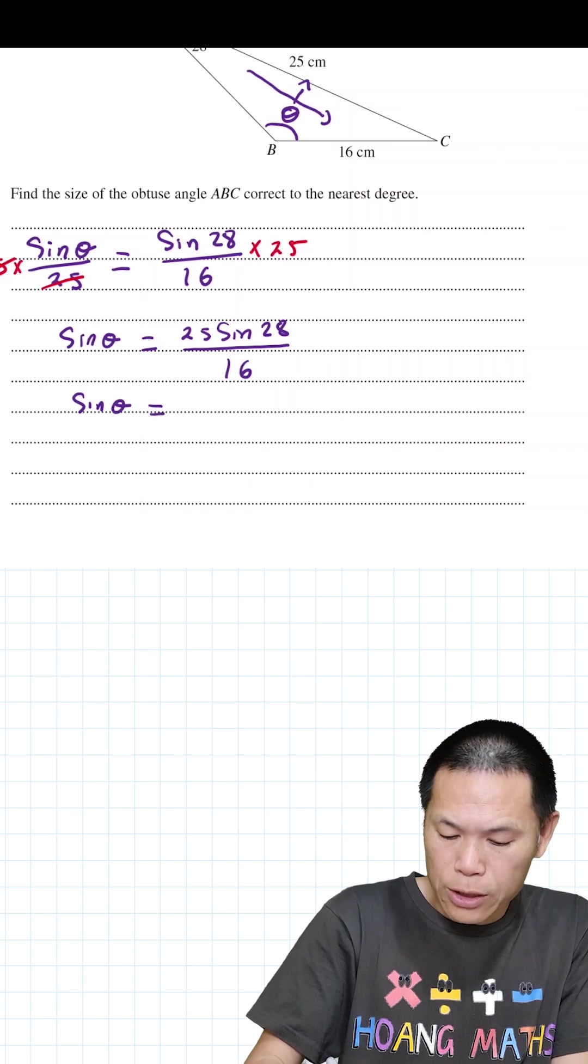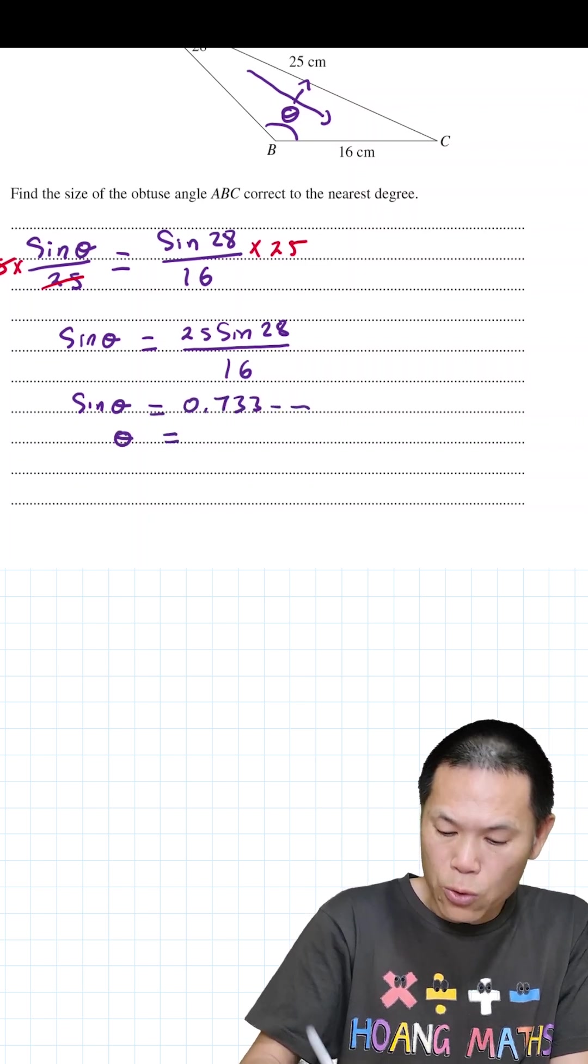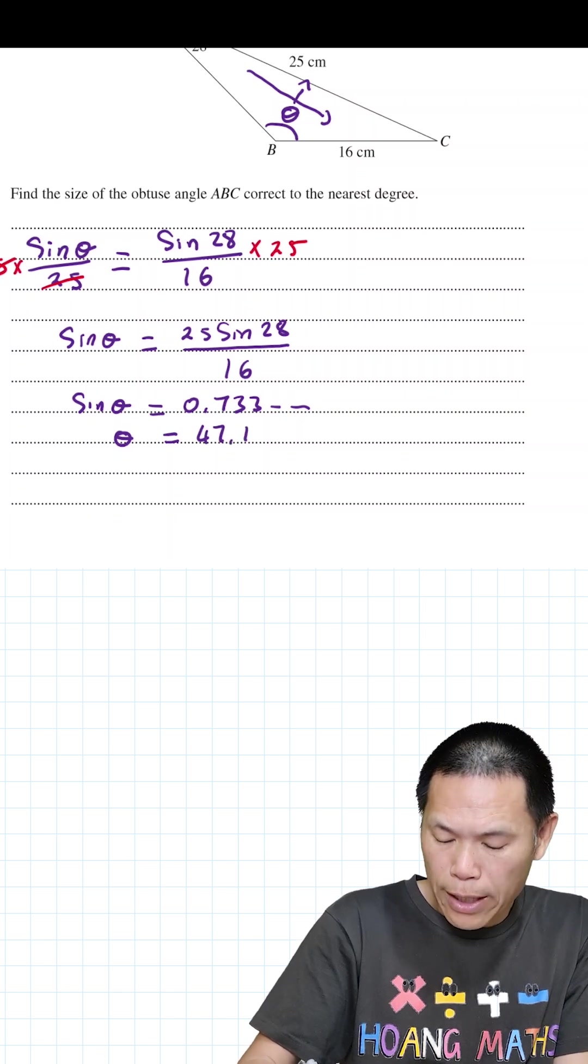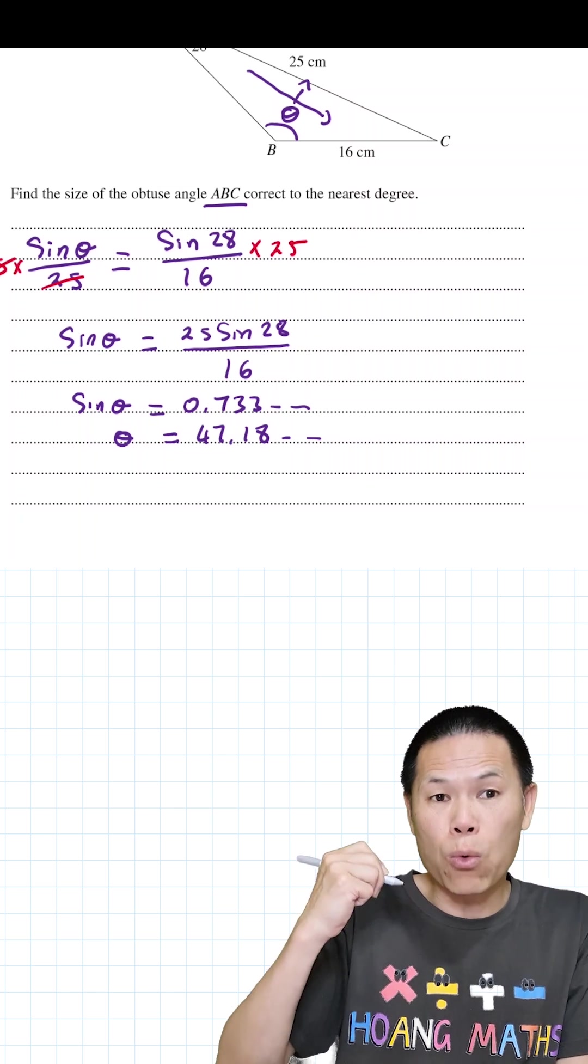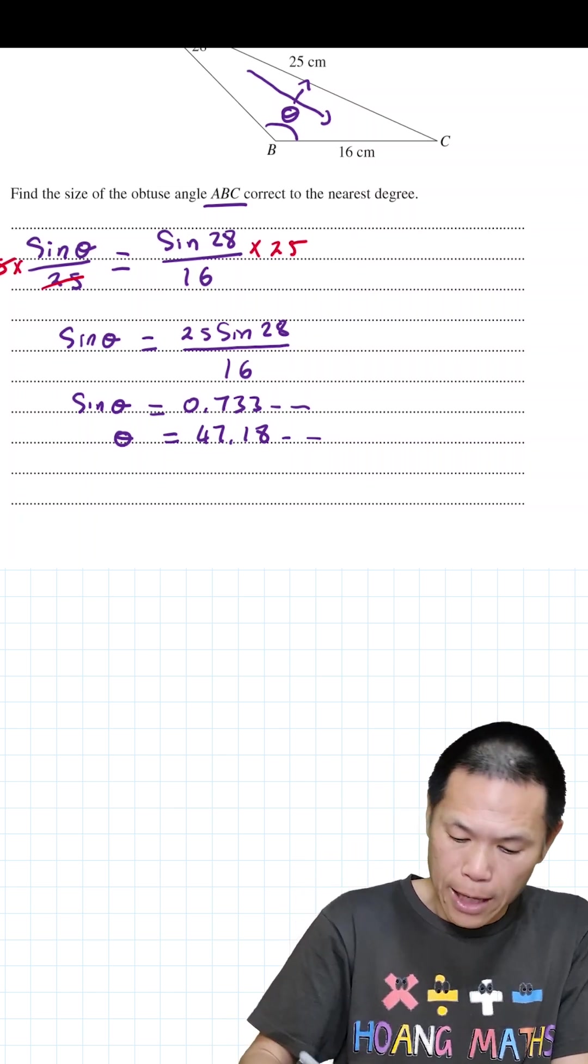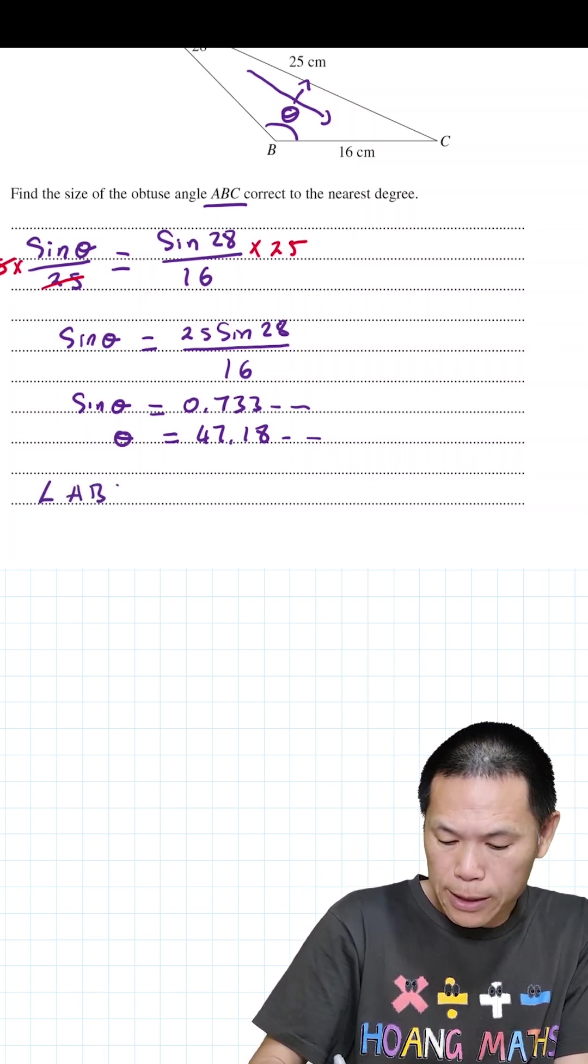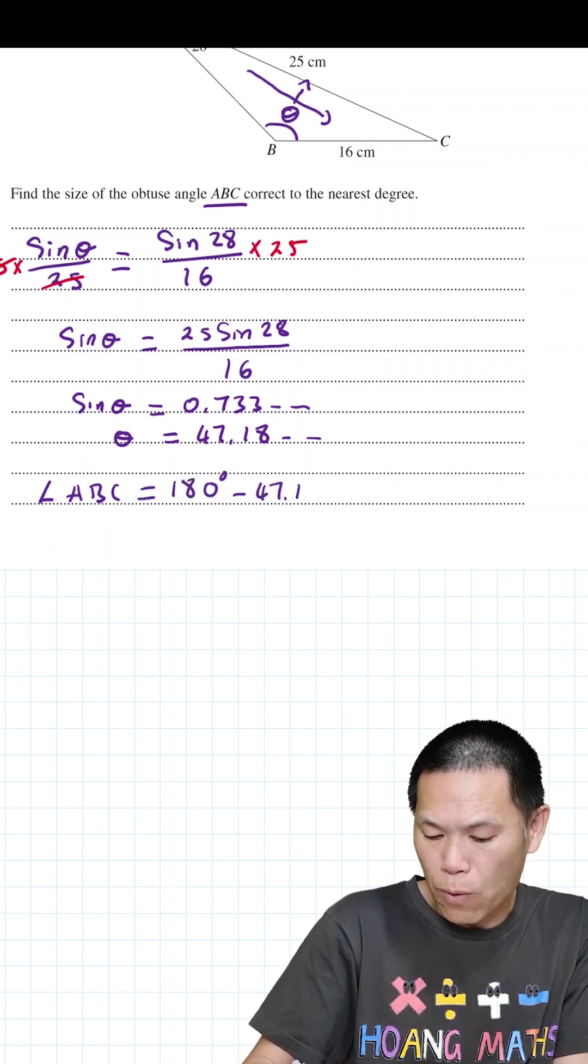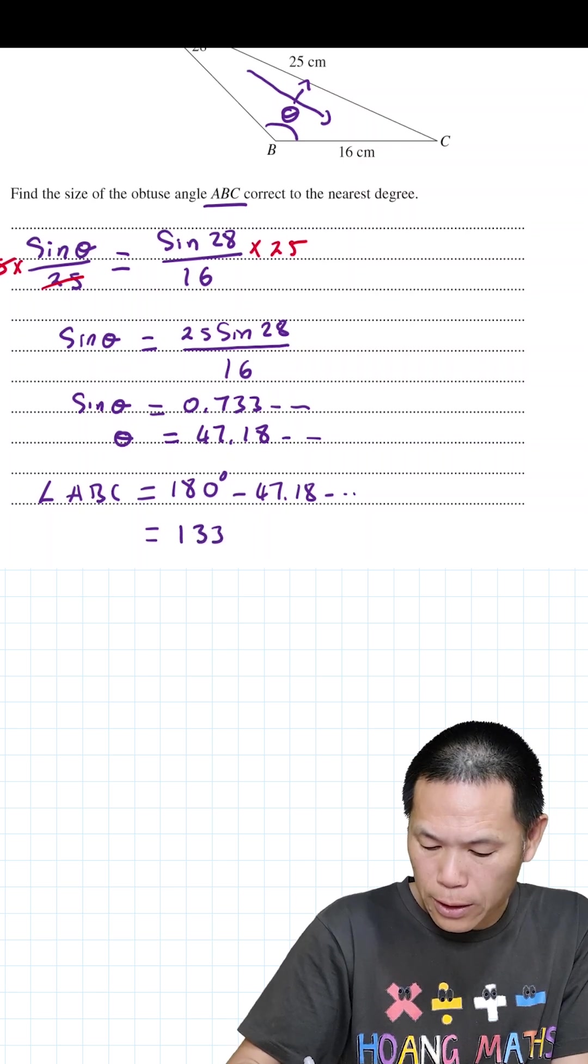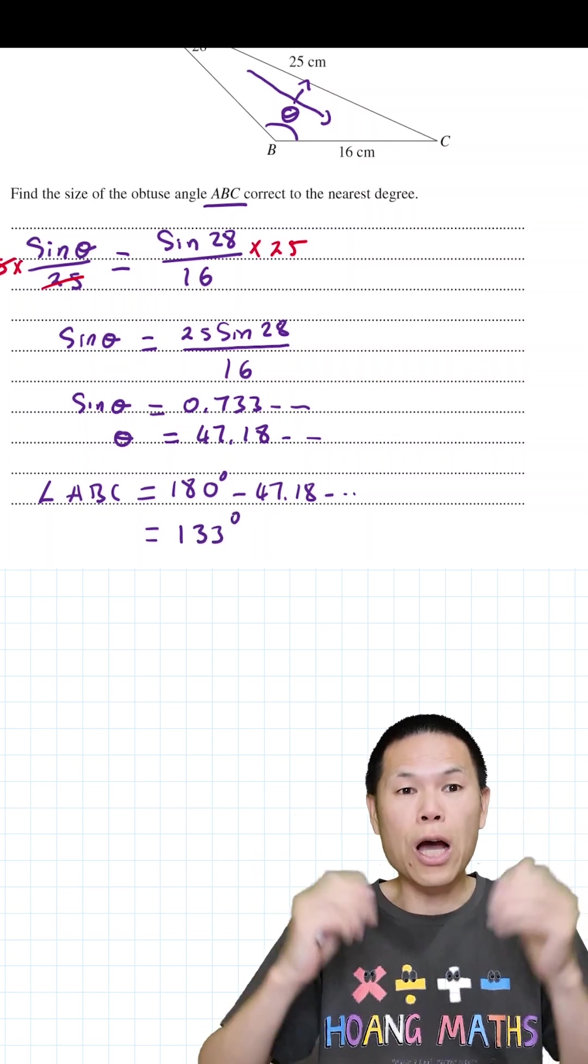So sine theta is 0.733, therefore theta equals 47.18. But we want the obtuse angle, so therefore we go 180 degrees minus that. So angle ABC is 180 minus 47.18, which is 133 degrees.